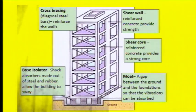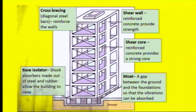This is an example of an earthquake-proof building. You can see cross bracing — diagonal reinforced walls — which makes the structure stronger. There is a shear core in the middle made of reinforced concrete, providing a really strong core. There is a base isolator made out of steel and rubber that absorbs the shock waves from the earthquake. And finally, there is a moat around the base of the building so that when the earthquake happens there is space between the ground and the building for vibrations and shock to be absorbed.